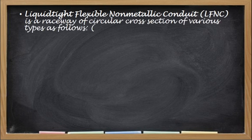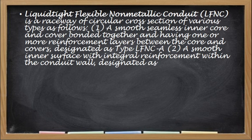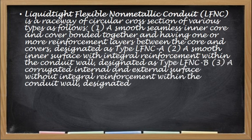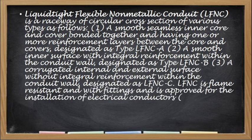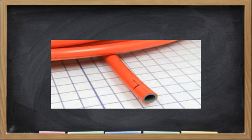The Liquid-tight Flexible Non-Metallic Conduit or LFNC is a raceway of circular construction of various types: Type LFNC-A has a smooth seamless inner core and cover bonded together with one or more reinforcement layers between the core and cover. Type LFNC-B has a smooth inner surface with integrated reinforcement within the conduit wall. Type LFNC-C has a corrugated internal and external surface without integral reinforcement within the conduit wall. LFNC is flame-resistant, comes with fittings, and is approved for the installation of electrical conductors. All three types can be used in corrosive areas where conductors need to be protected from vapors and liquids. This is a photo of a liquid-tight flexible non-metallic conduit.